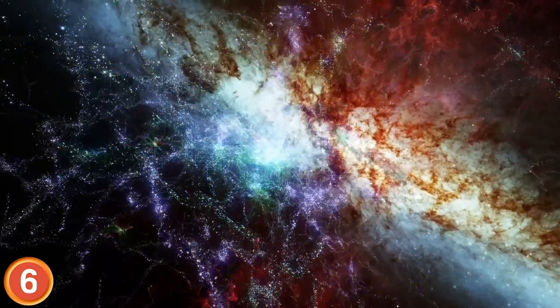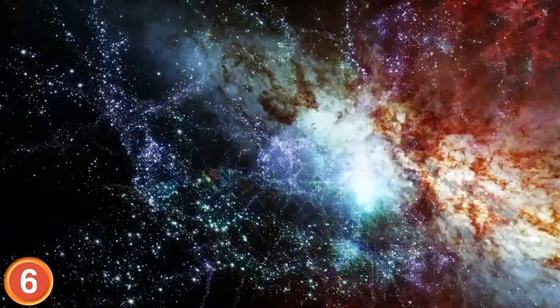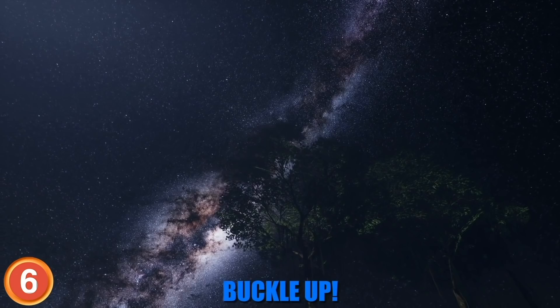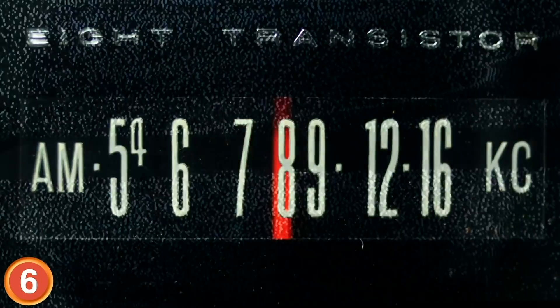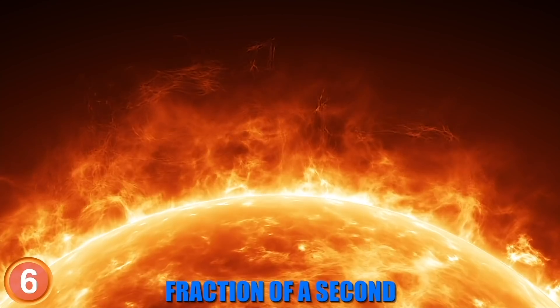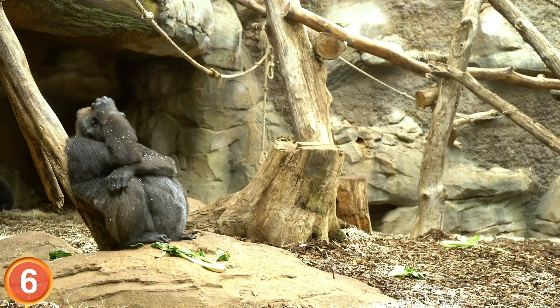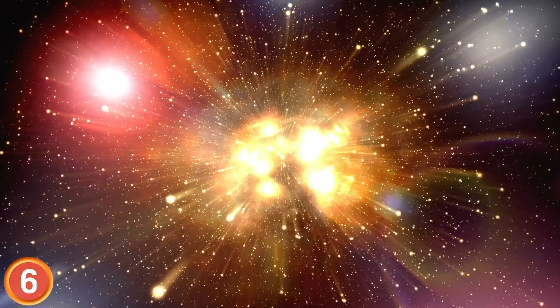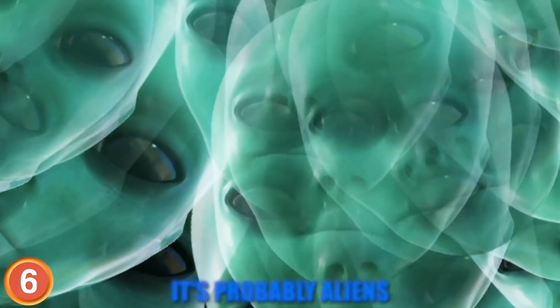It appears that these mysterious bursts are originating millions of light years from outside of the Milky Way. Now, here's a total mind blow, so buckle up. In order for FRBs to be seen from such a distance, they must release as much energy in a fraction of a second as the sun does in 80 years. We are completely clueless on how these things are formed. Some say that they are caused by black holes colliding. Others say it's aliens. It's probably aliens.